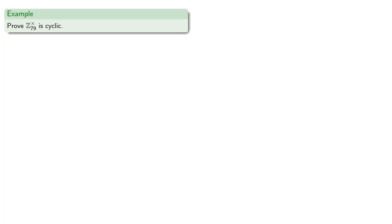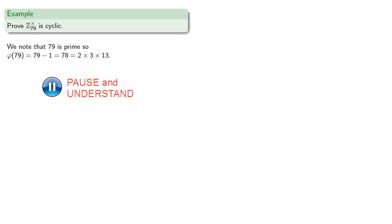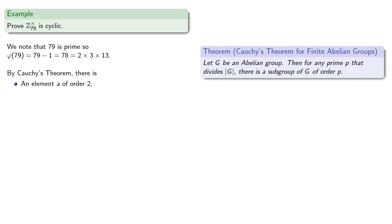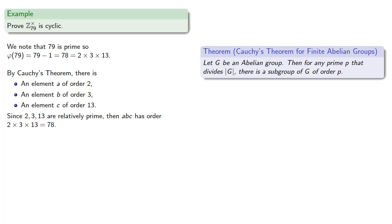For example, let's prove that the multiplicative group of integers mod 79 is cyclic. We note that 79 is prime, so the number of elements in this multiplicative group is φ(79), that's 79 minus 1, which is 78, or 2 times 3 times 13. Now by Cauchy's theorem, there is an element a of order 2, an element b of order 3, and an element c of order 13. And since 2, 3, and 13 are relatively prime, the product abc has order 2 times 3 times 13, which is 78 — the size of our group. So the multiplicative group of integers mod 79 is generated by the element abc.